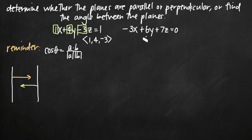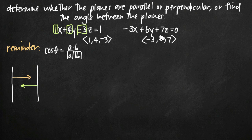Same thing for the second plane: I take the coefficients, and my normal vector is (-3, 6, 7). Now that I have a normal vector for each one, the way to test whether they're parallel is by taking the ratio of each of my components to see whether or not the ratios are equal.